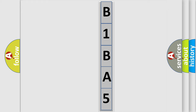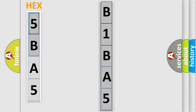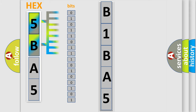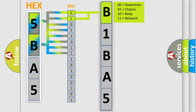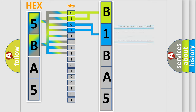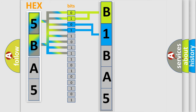The error code is split into two bytes consisting of 16 bits. One bit is the basic unit that each computer works with. The bit has two logical states: zero, low level; and one, high level. By combining the first two bits, the basic character of the error code is expressed. The next two bits determine the second character. The last four bits of the first byte define the third character of the code.